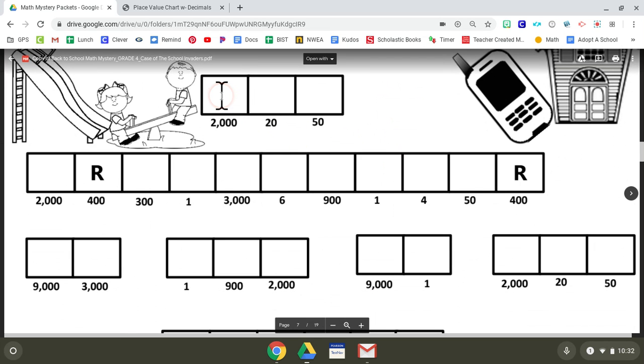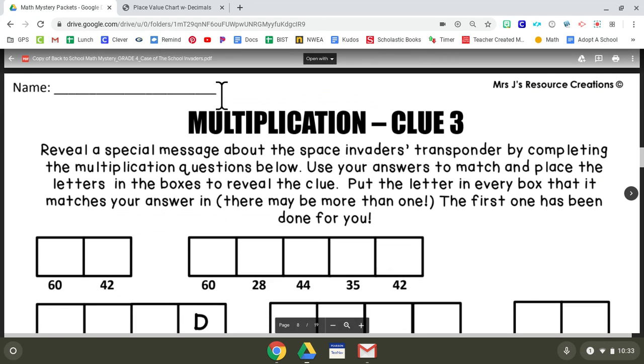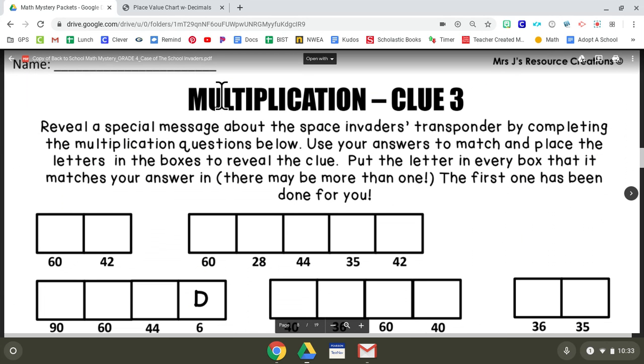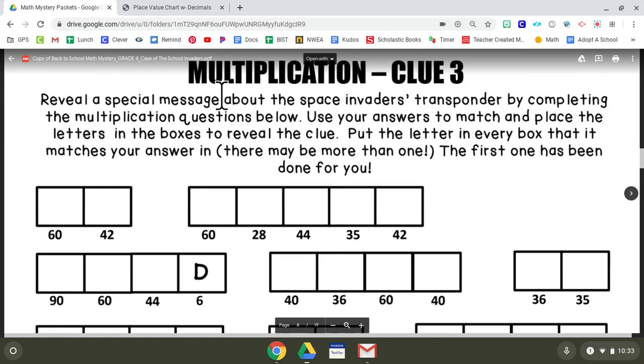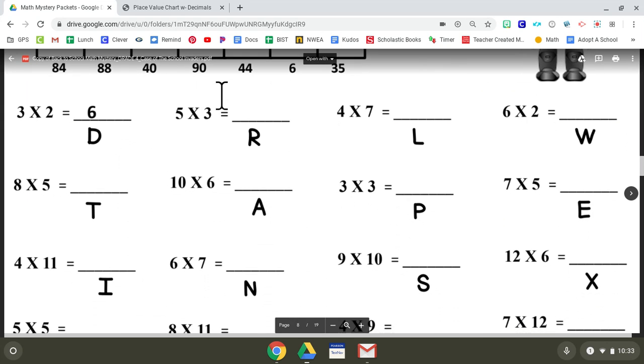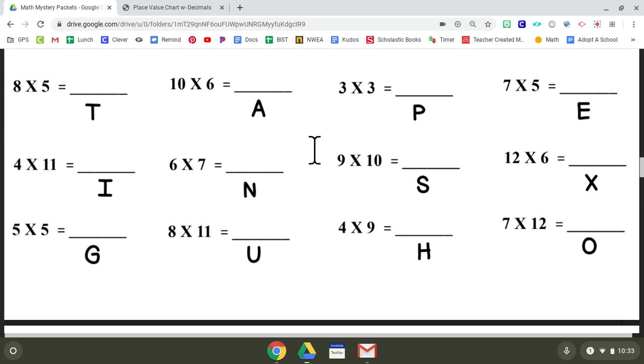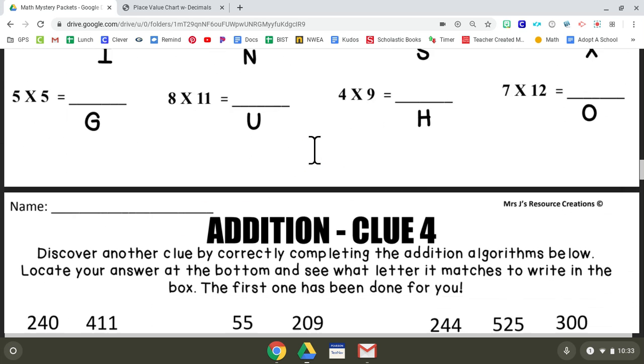Moving on to Wednesday: reveal a special message about the space invaders' transponder by completing the multiplication questions below. Lucky for you, these are not too hard at all. You guys know how to multiply: three times two is six, five times three is, four times seven is, six times two is. I can tell you, but these are all easy. You should all be able to get these things because you are fourth graders and you know your multiplication. I believe in you.